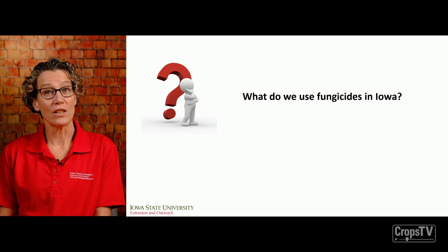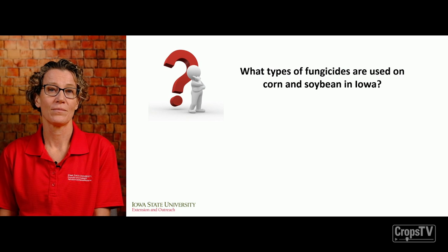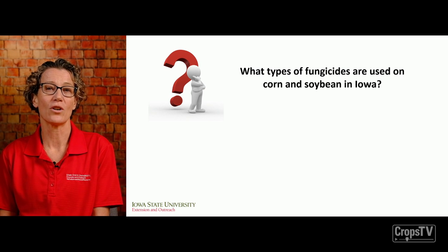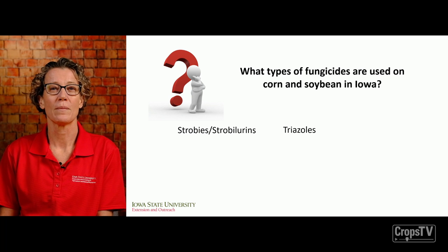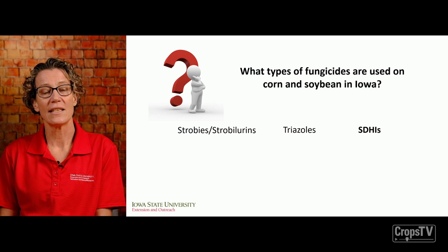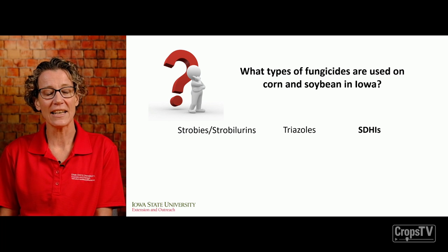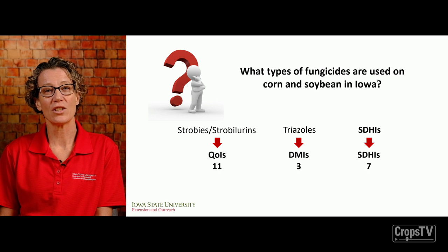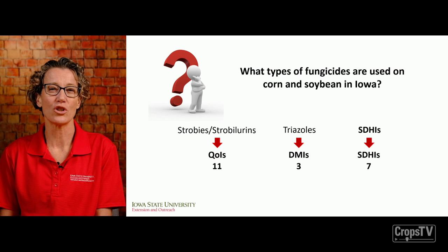Why do we use fungicides in Iowa? To manage disease and protect yield. The types of fungicides we use on corn and soybean are the strobis or strobilurins, triazoles, and the SDHIs. The proper names for these groups are the QOIs or group 11 fungicides, the DMIs or group 3 fungicides, and the SDHIs, which belong to group 7.